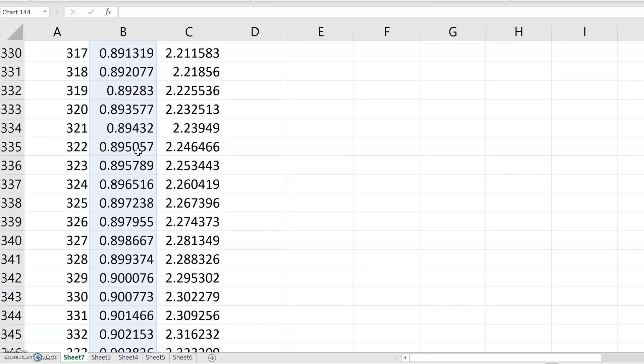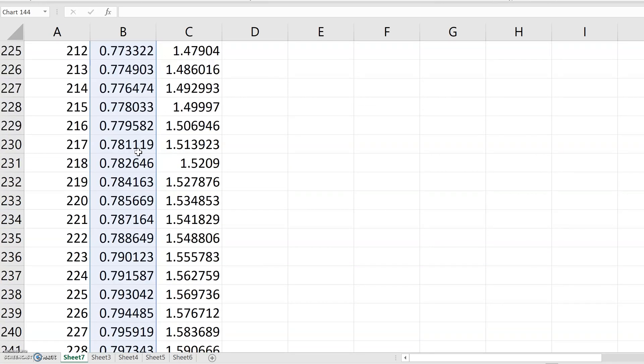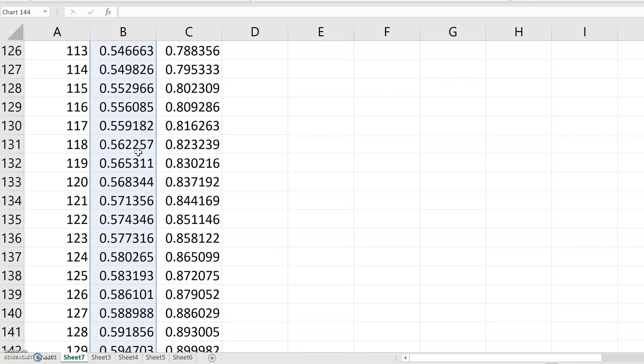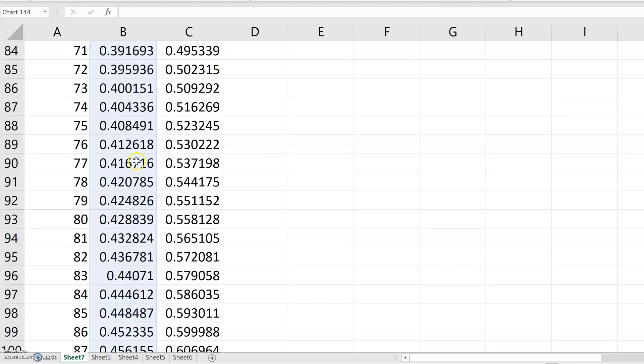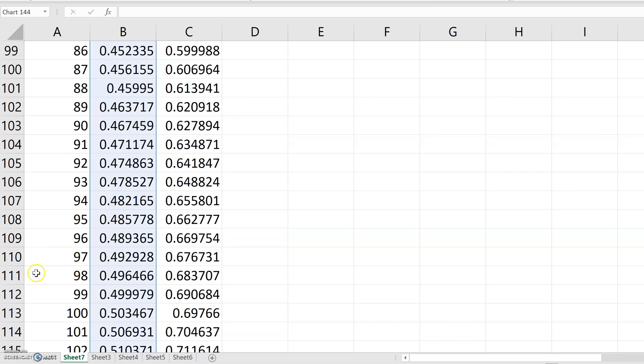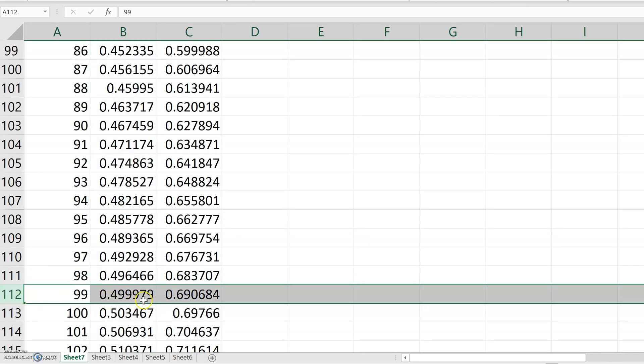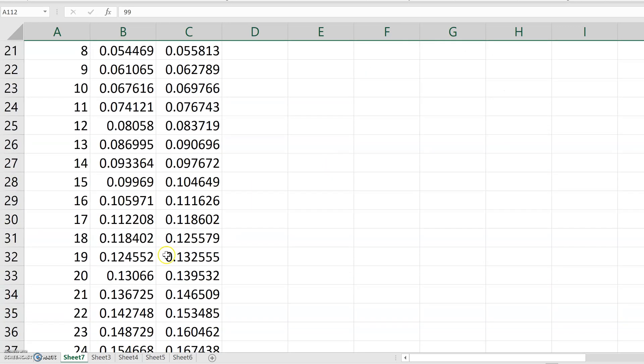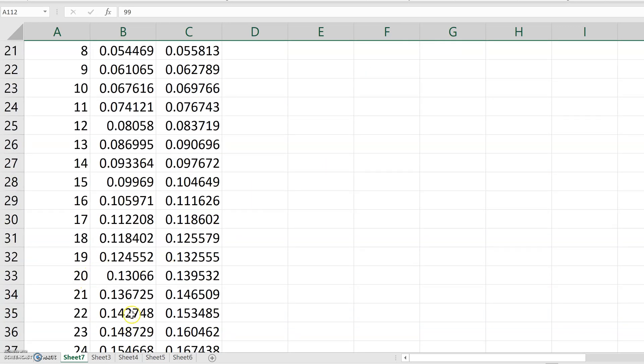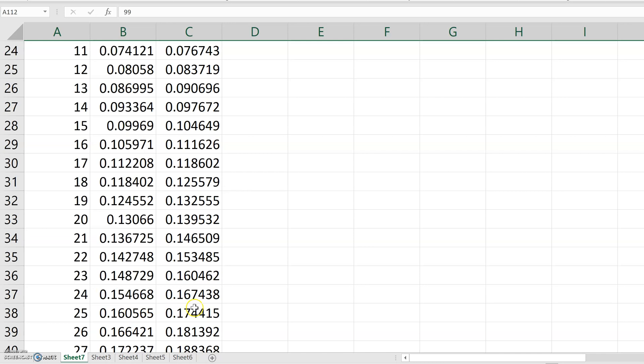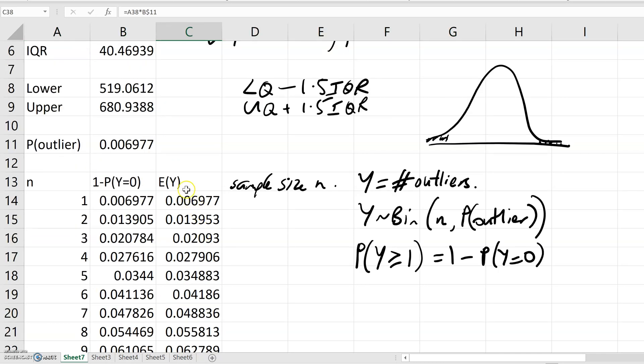We can scroll. It's a terrible way of doing it, but somewhere around 100 observations, there's a 50% chance that we've got at least one outlier.